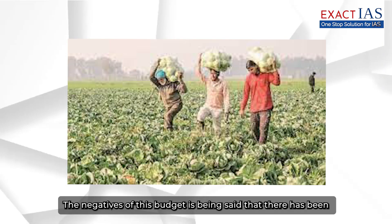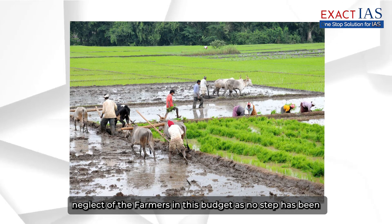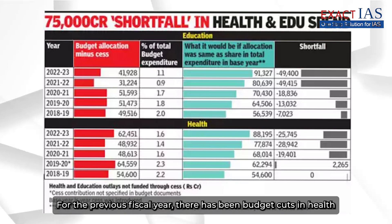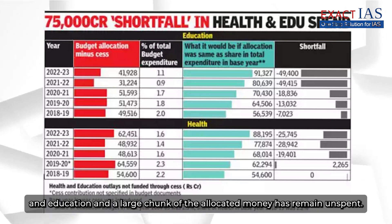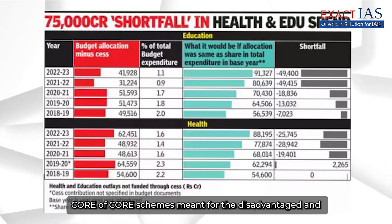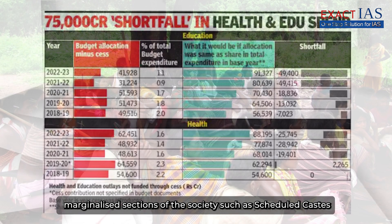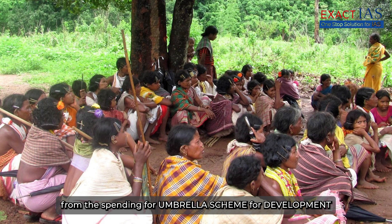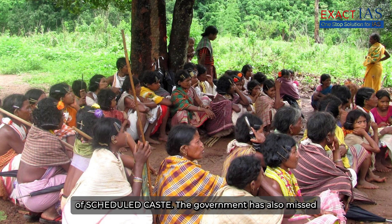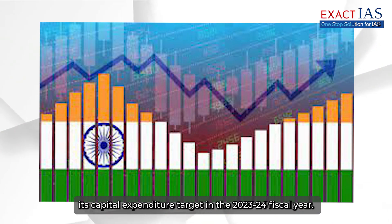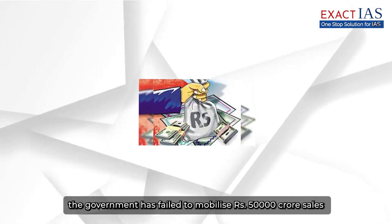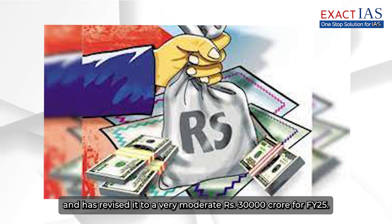The negatives of this budget include neglect of farmers, as no step has been taken towards rationalisation of food and fertiliser subsidy. For the previous fiscal year, there have been budget cuts in health and education and a large chunk of allocated money has remained unspent. Core-of-core schemes meant for disadvantaged sections such as scheduled castes and scheduled tribes have seen less spending, as is evident from the spending for the umbrella scheme for development of scheduled castes. The government also missed its capital expenditure target in 2023-24 and failed to mobilise the Rs 50,000 crore divestment target, revising it to a moderate Rs 30,000 crore for fiscal year 2025.